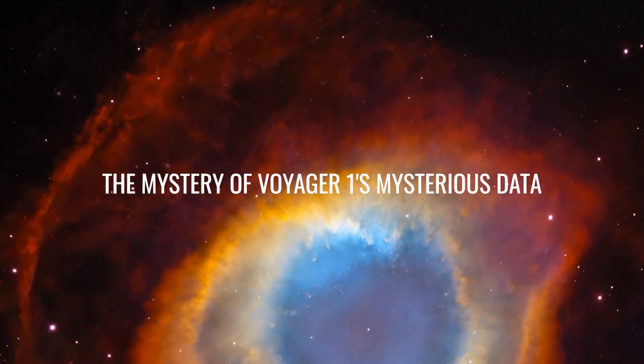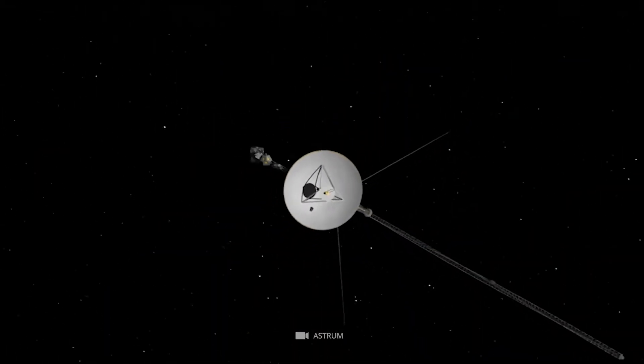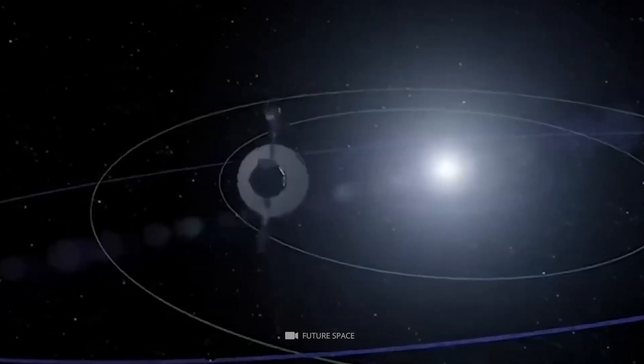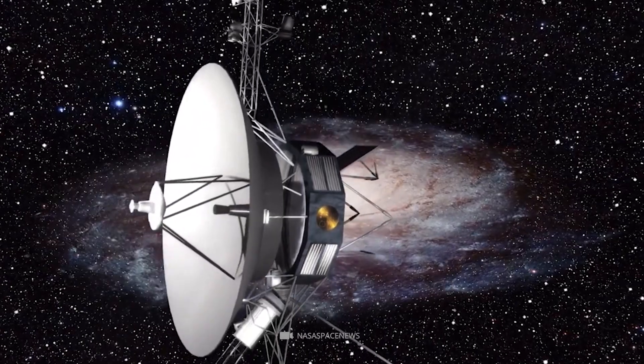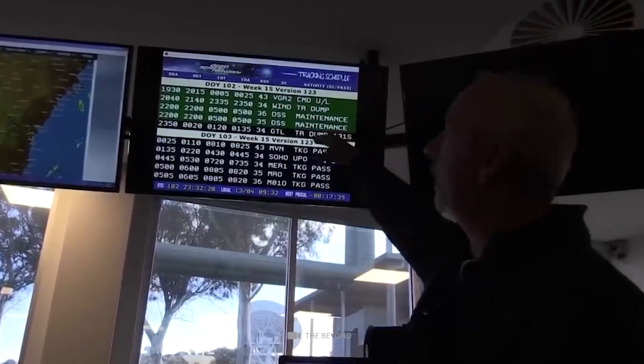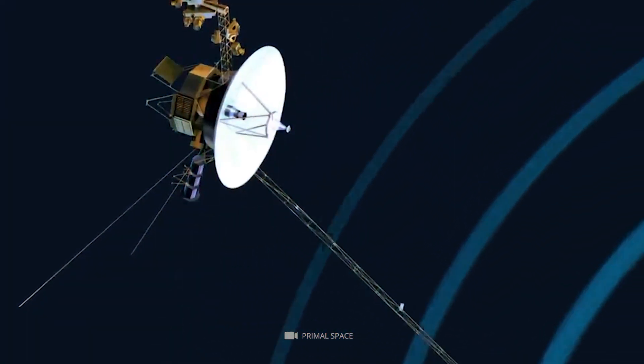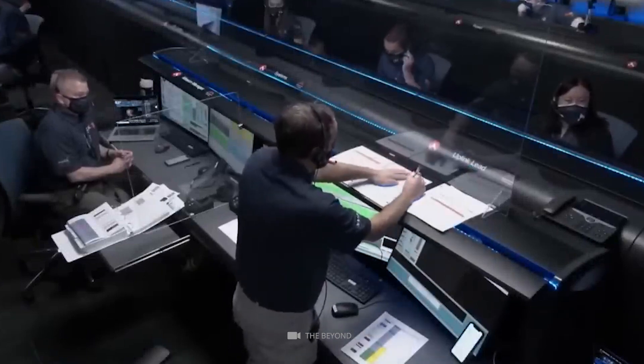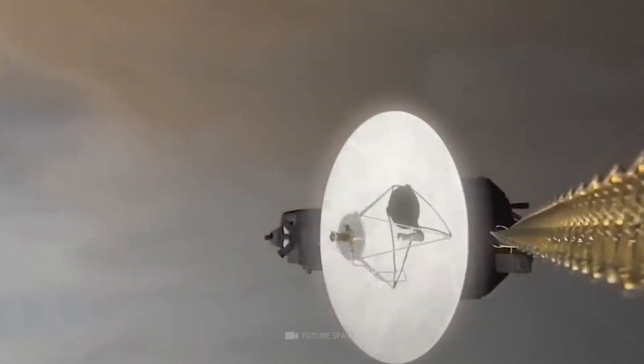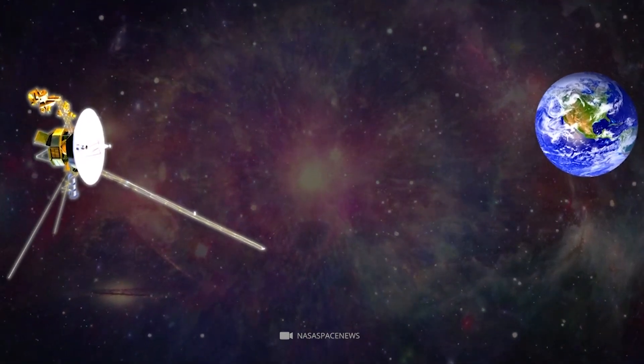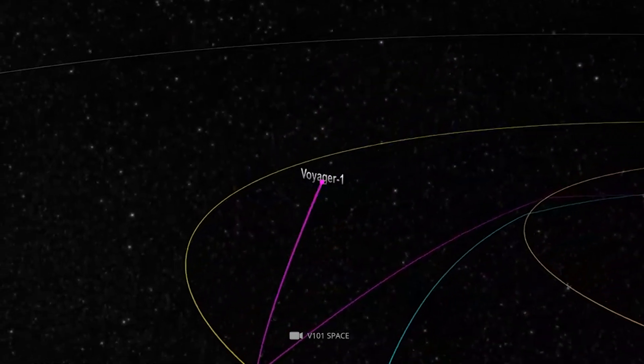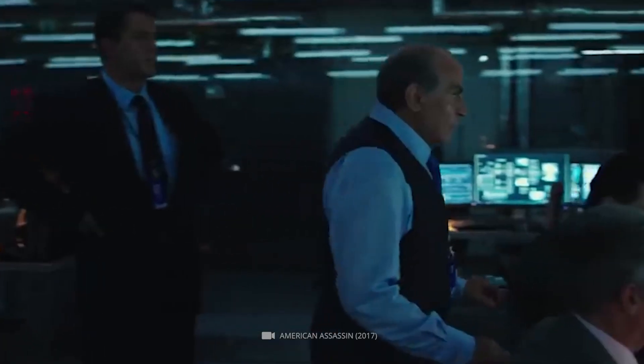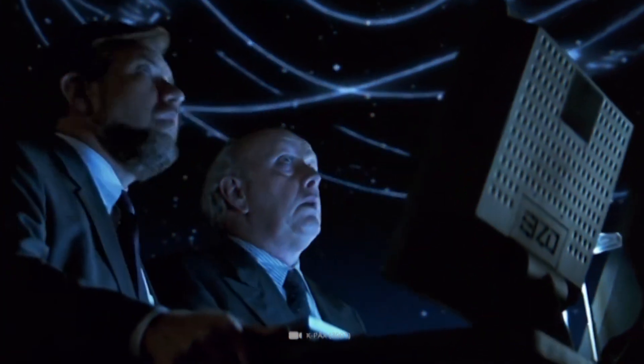The Mystery of Voyager 1's Mysterious Data. After it was launched in 1977, Voyager 1 immediately embarked on an expedition to explore the solar system's outer planets. As anticipated, the spacecraft completed this mission, allowing humanity to gain valuable knowledge about these distant worlds. Voyager 1 would then continue the journey, traveling into deep space. Much of what was anticipated by scientists at NASA was achieved, no major surprises at this point.